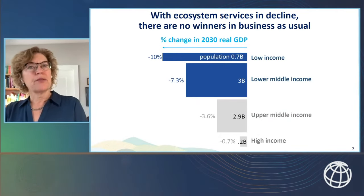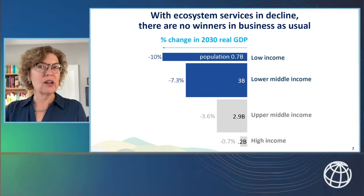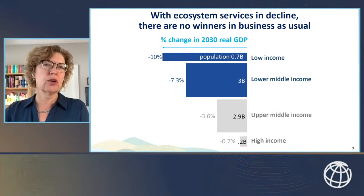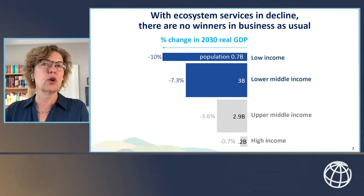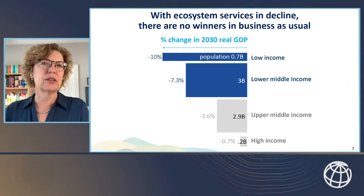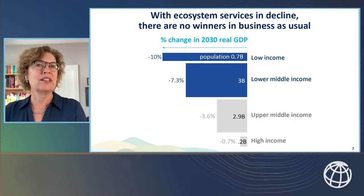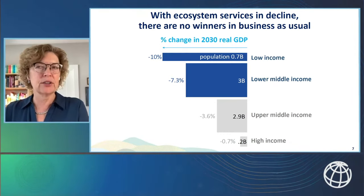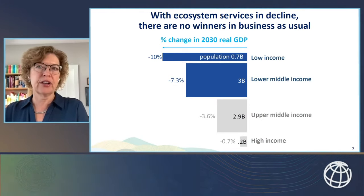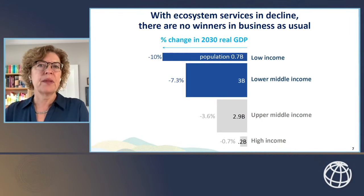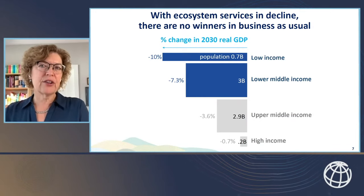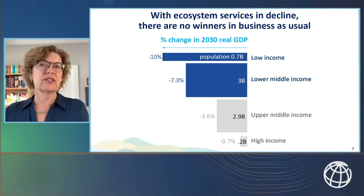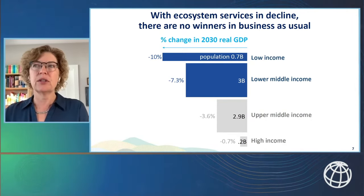The analysis reveals that the world cannot afford the collapse of ecosystem services. Even a partial collapse would cost 2.3% of global GDP — that's 2.7 trillion US dollars — in 2030. The negative growth impacts are highest for low-income countries, particularly in sub-Saharan Africa and South Asia. And this does not even include the direct effects of climate change running in parallel, making these figures a very conservative estimate of losses.